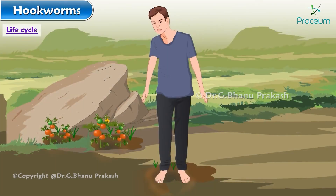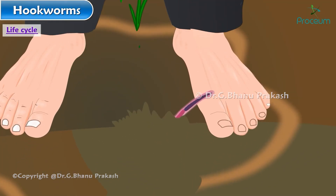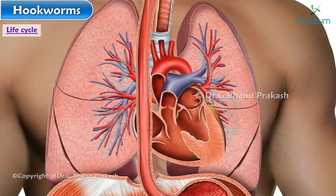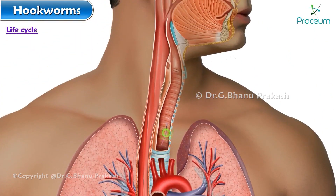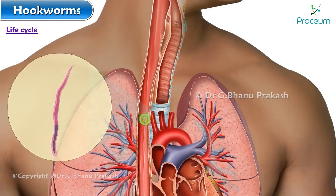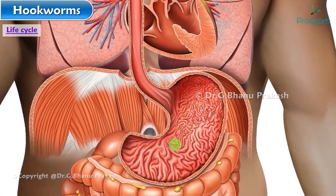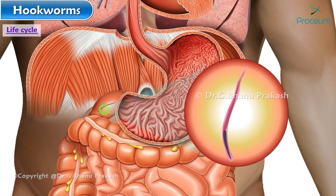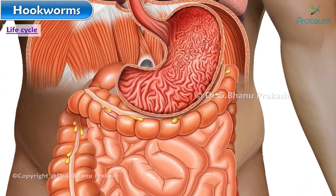On contact with the human host, typically bare feet, the larvae penetrate the skin and are carried through the blood vessels to the heart and then to the lungs. They penetrate into the pulmonary alveoli, ascend the bronchial tree to the pharynx, and are swallowed. The larvae reach the jejunum of the small intestine, where they reside and mature into adults.